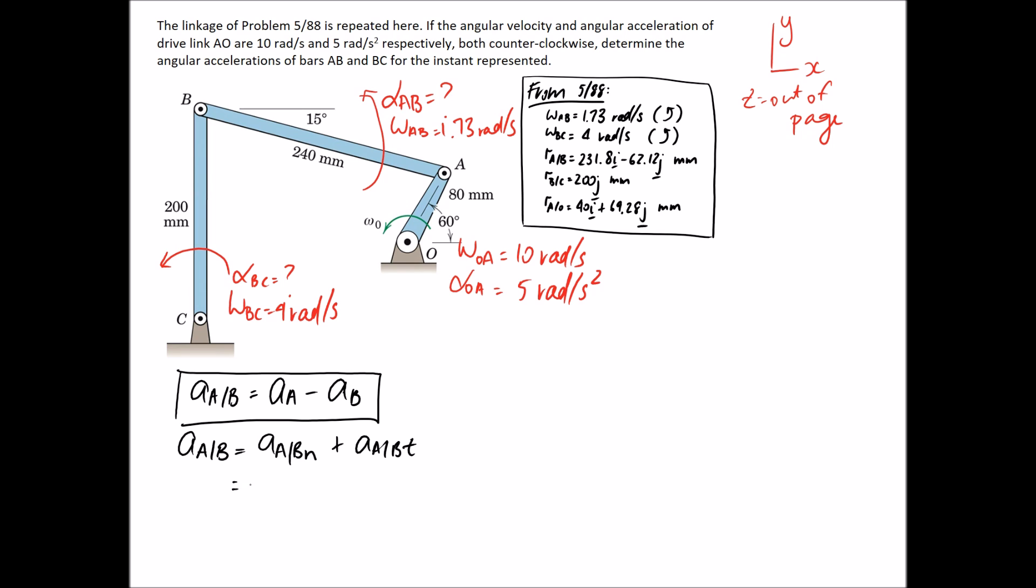It's equal to omega cross omega cross R. So in this case, between A and B, omega is that 1.73. And the radius, it's going to be between A and B. Remember, if you're looking at A relative to B, it needs to be the same form inside the radius as well.